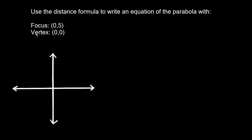The problem says: use the distance formula to write an equation of the parabola with a focus at (0,5) and a vertex at the origin, (0,0). So first, let's start with the vertex. That should sound pretty familiar — it's just the highest or lowest point on a parabola. In this case, it's at the origin, right there.